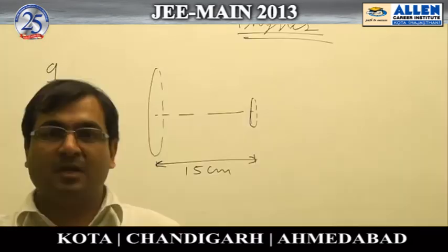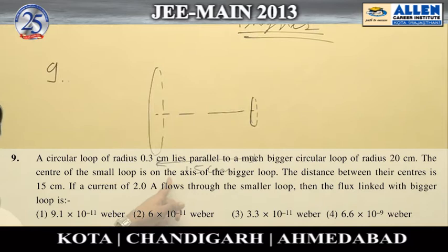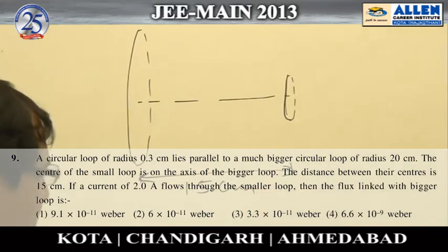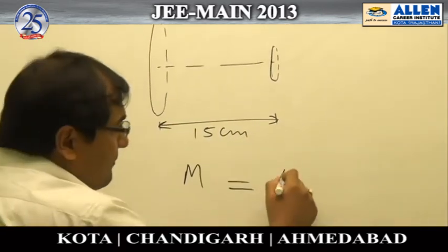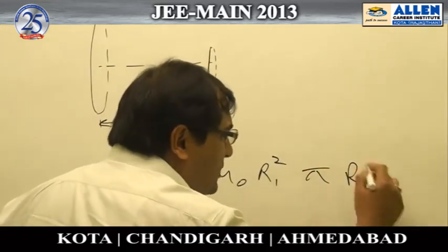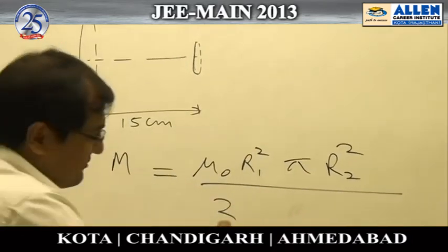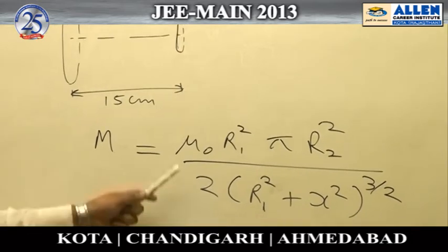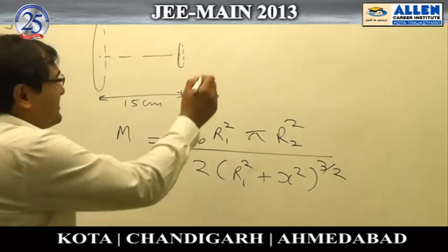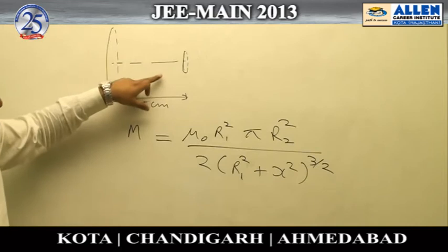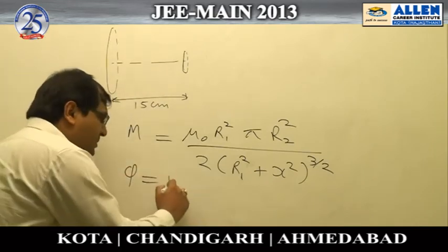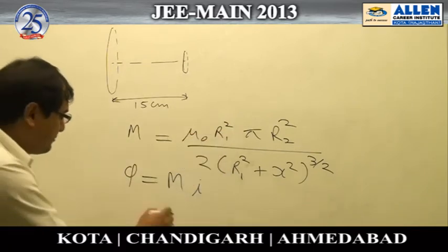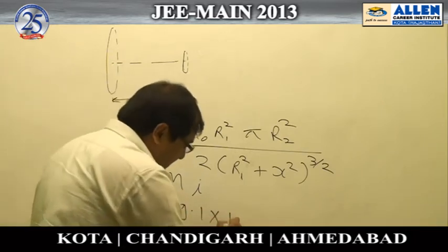Question number nine is about mutual inductance. There is a large ring and a small ring separated by 15 centimetres. The mutual inductance of the system is M = μ₀ × r₁² × π × r₂² / (2 × (r₁² + x²)^(3/2)). A current flows in the smaller ring and we need to find the flux through the bigger ring. Using flux = M × I and substituting all given values, the answer is 9.1 × 10⁻¹¹.